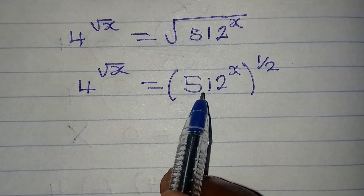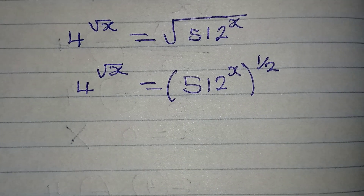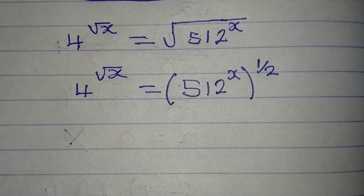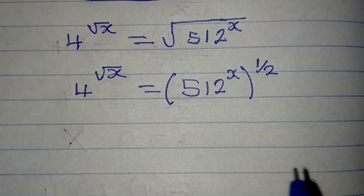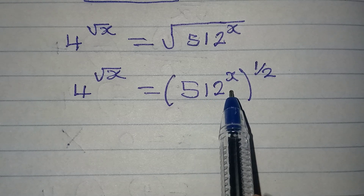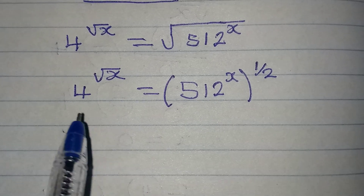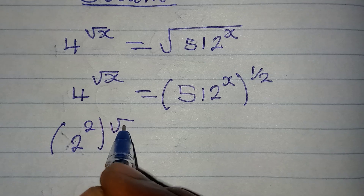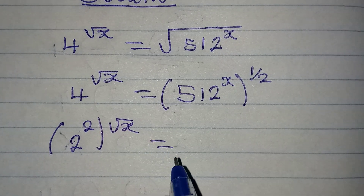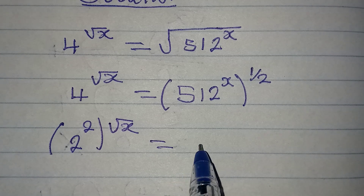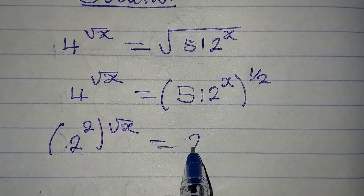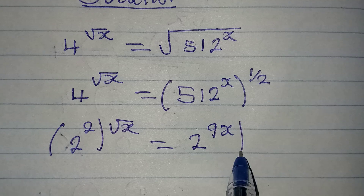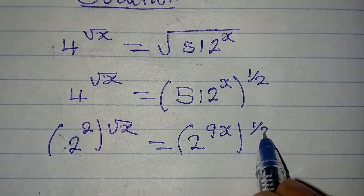Can we write 512 to have 4 as the base? No, because 4 to the power of 4 is 256, and 4 to the power of 5 is already more than 512. So what do we do? Let's reduce: 4 is the same as 2 squared. Then 512 is the same as 2 to the power of 9, so we multiply by x to have 9x, but the 1 over 2 is still outside.